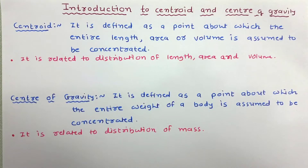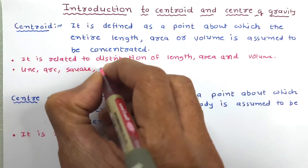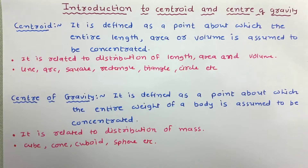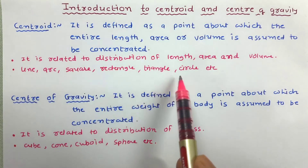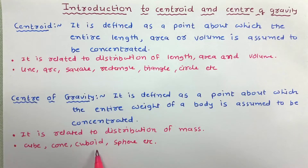Now let us see some differences between these two. Centroid is related to the distribution of length in a one-dimensional object, area in a two-dimensional object, and volume in a three-dimensional object. Center of gravity is related to the distribution of mass in a particular body. Centroid is used to represent the center of a line, arc, square, rectangle, triangle, circle, etc., whereas center of gravity is a term used to represent the center of a solid body like a cube, cone, cuboid, and sphere.